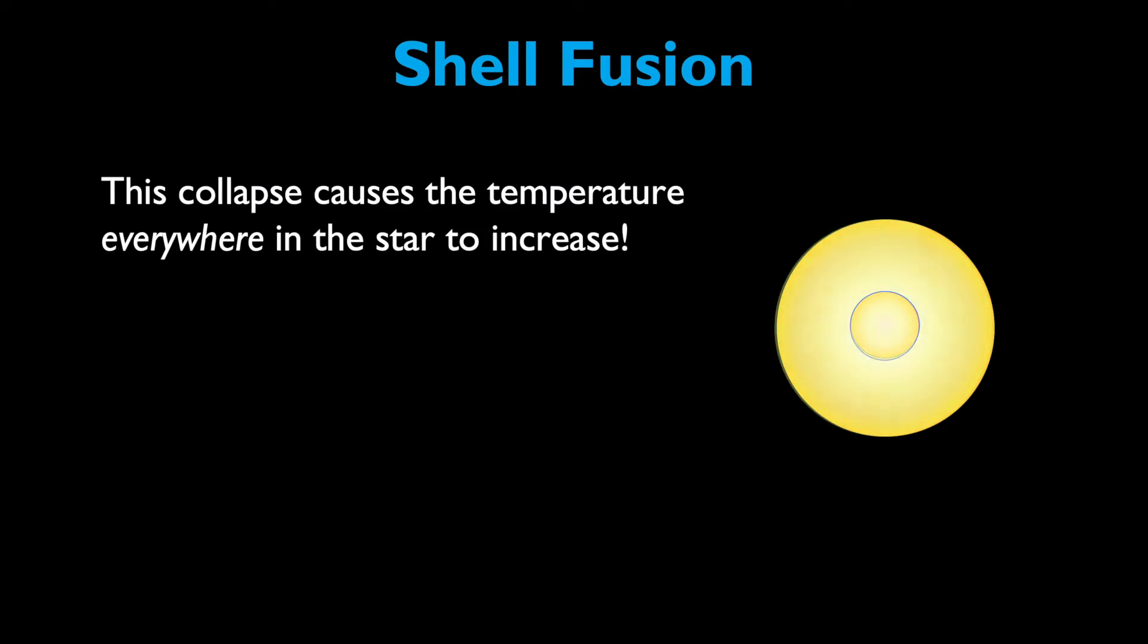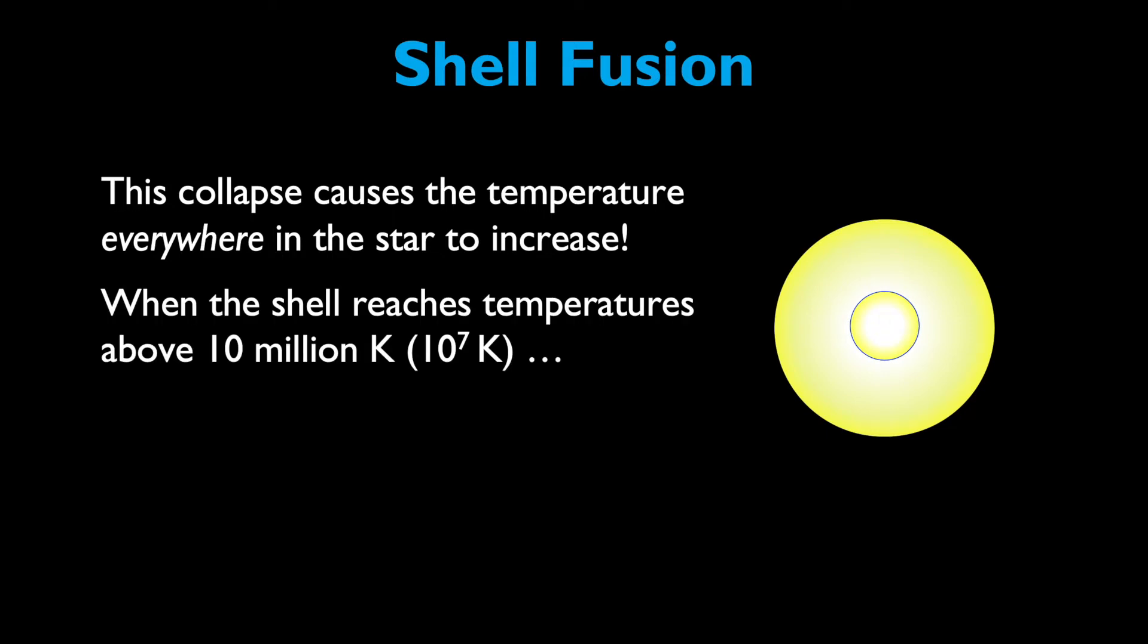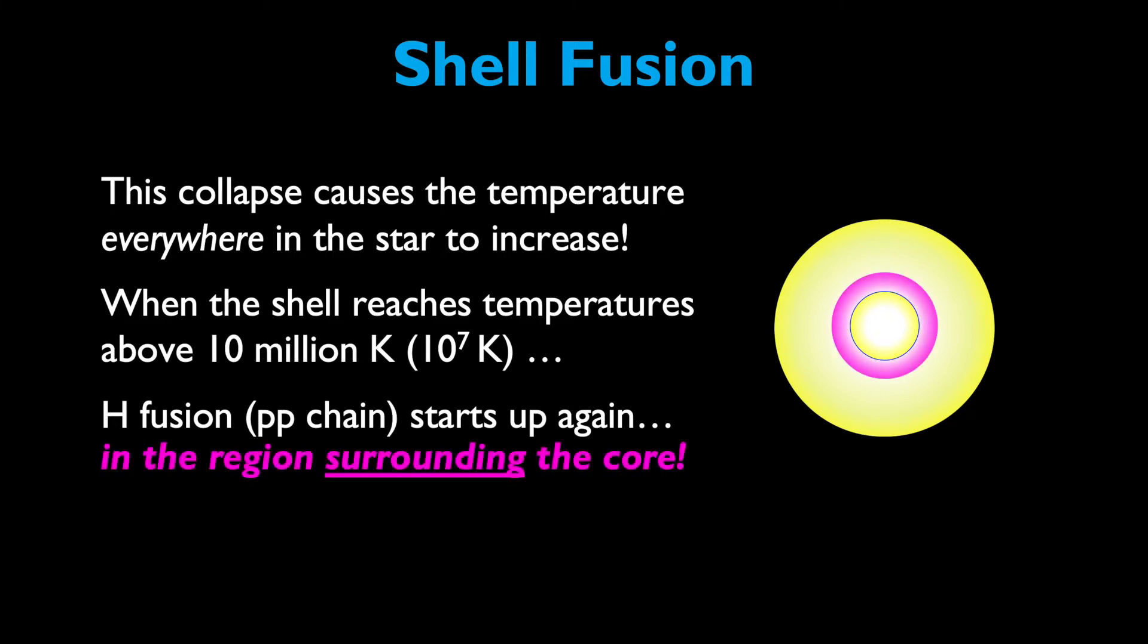This collapse causes the star to increase in temperature everywhere, in every layer. When the shell reaches temperatures above 10 million Kelvin, the temperature that's necessary for kick-starting the proton-proton chain of hydrogen fusion, hydrogen fusion picks up again. But this time, it's happening in the region surrounding the core. At this point in time, the star has hydrogen-shell fusion surrounding a dormant helium core.